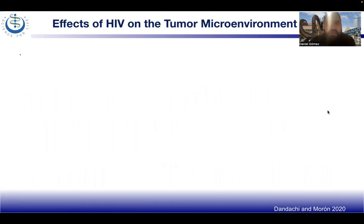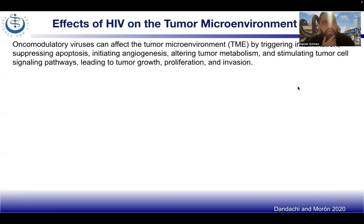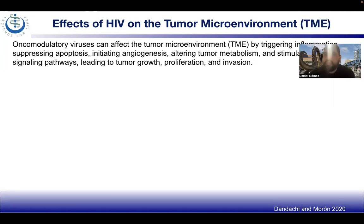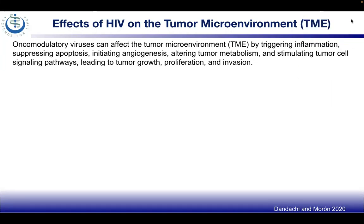Looking at the effects of HIV on the tumor microenvironment: oncomodulatory viruses can affect the tumor microenvironment, triggering inflammation, suppressing apoptosis, initiating angiogenesis, and altering tumor metabolism and stimulating tumor cell signaling pathways leading to tumor growth, proliferation, and invasion.